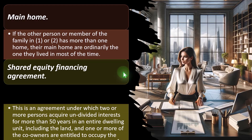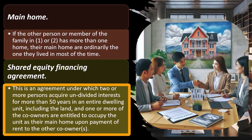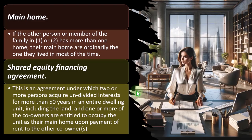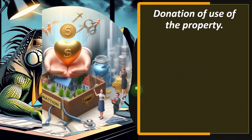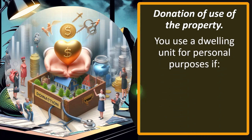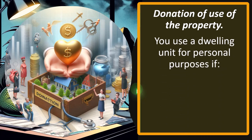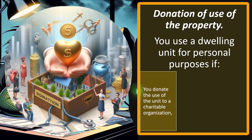Shared equity financing agreement: this is an agreement under which two or more persons acquire undivided interests for more than 50 years in an entire dwelling unit, including the land, and one or more of the co-owners are entitled to occupy the unit as their main home upon paying rent to the other owner(s). Donation of use of the property: you use a dwelling unit for personal purposes if you donate the use of the unit to a charitable organization.